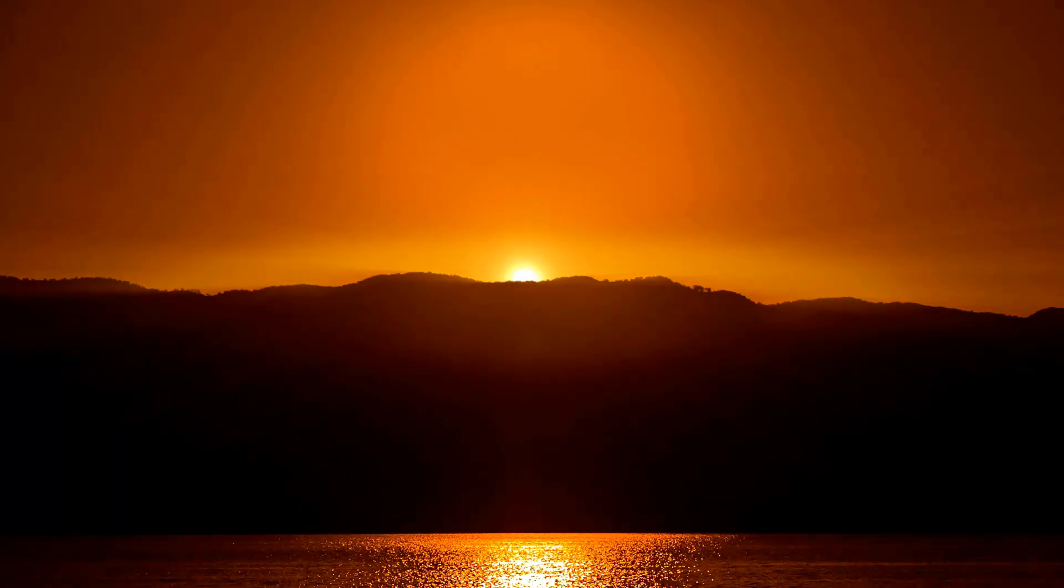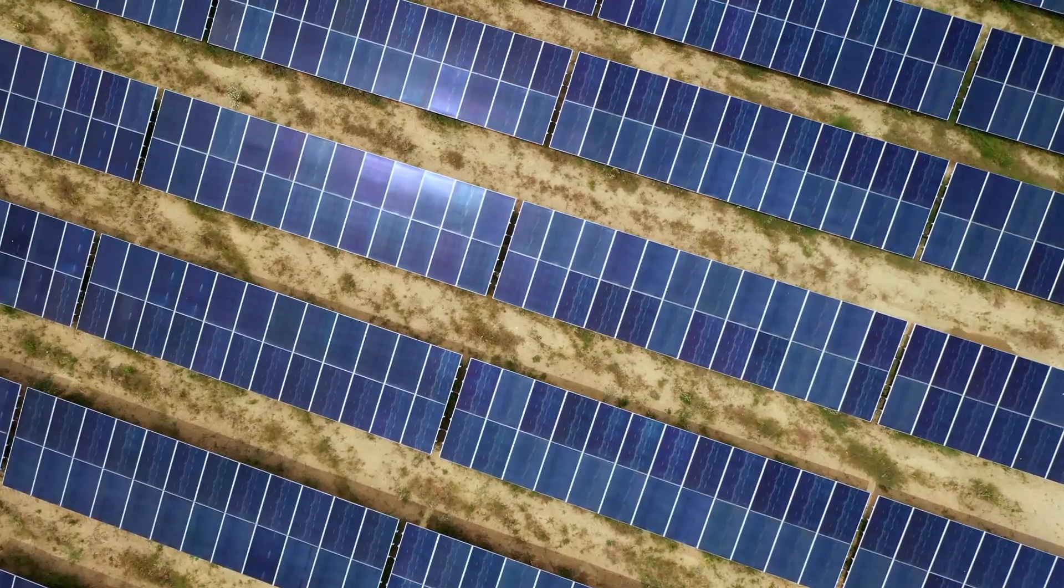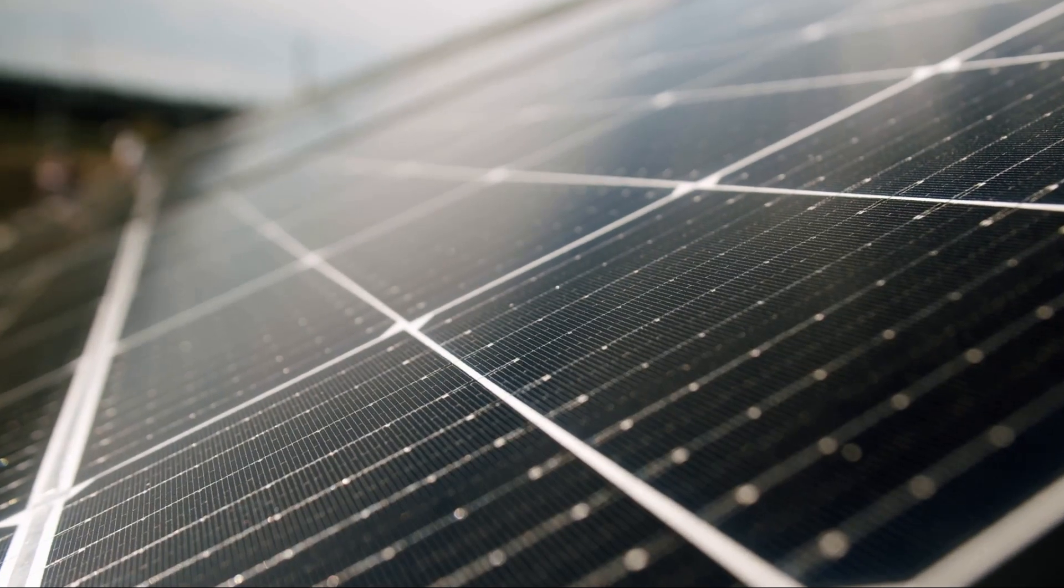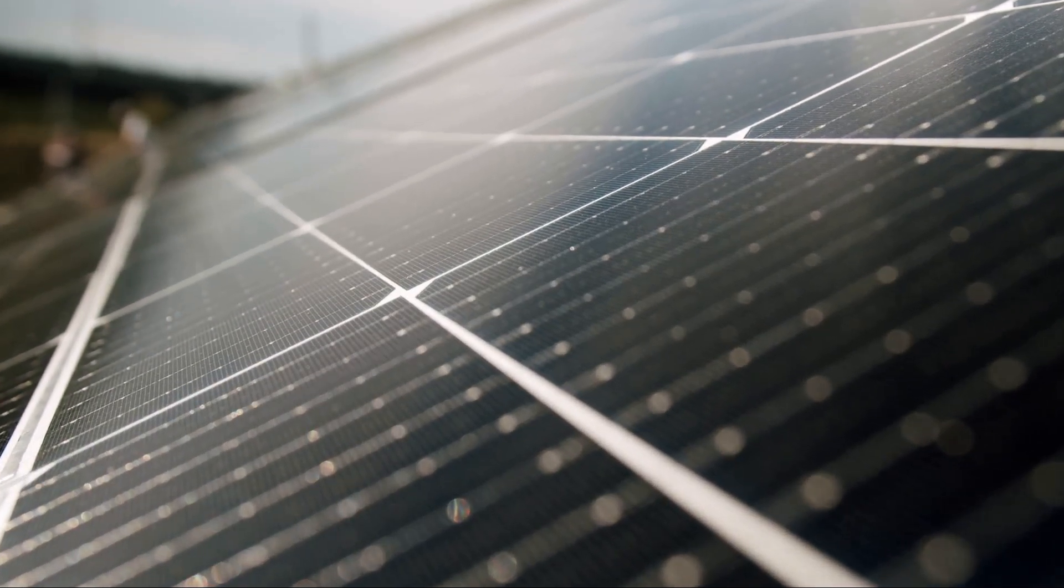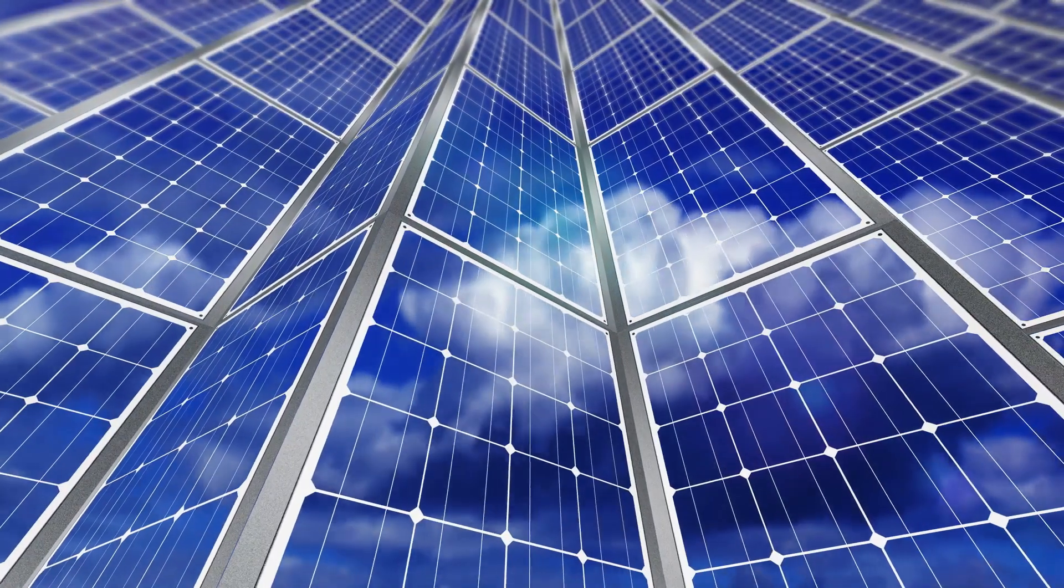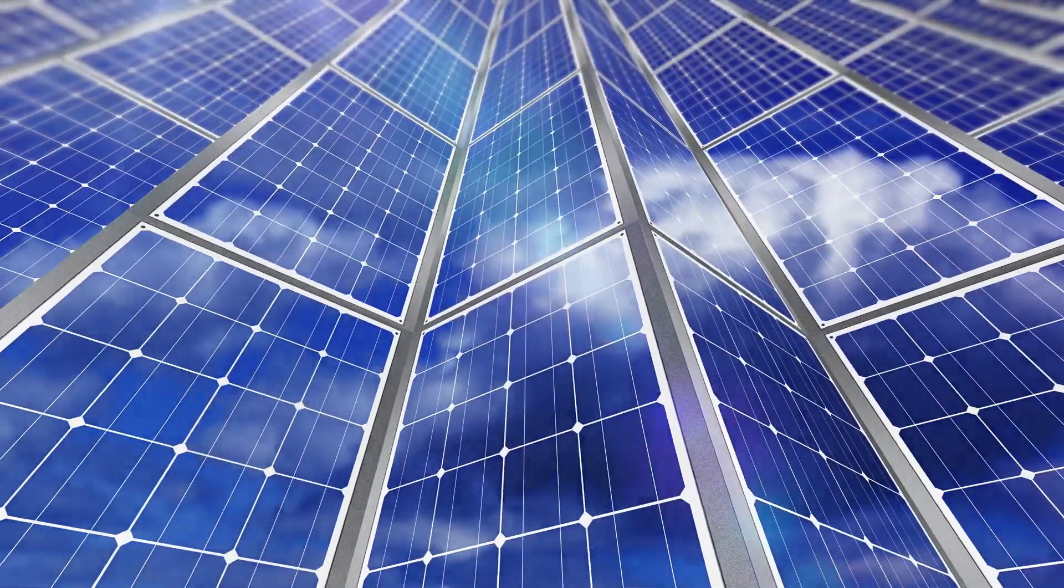Solar energy harnesses the sun's powerful and abundant rays, transforming them into usable energy. It all starts with solar cells, typically made from silicon, which are capable of converting sunlight into electricity. When the sun's rays hit a solar cell, they energize the electrons in the silicon, causing them to move and create an electric current.